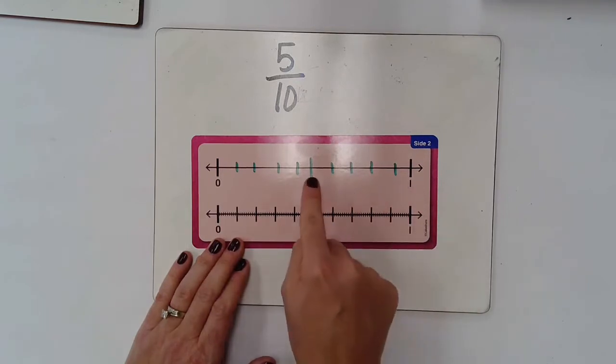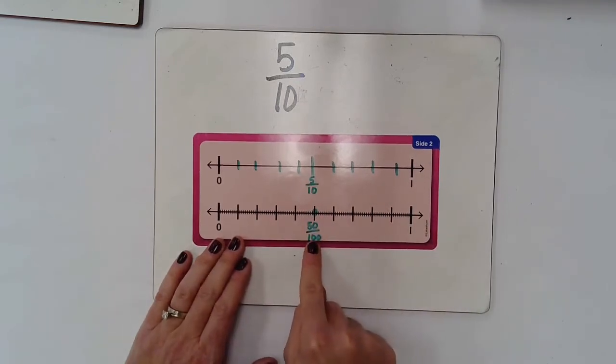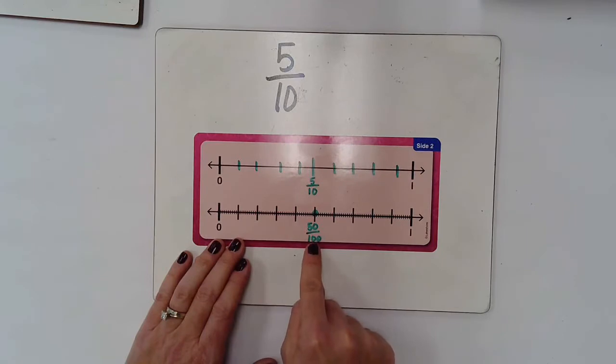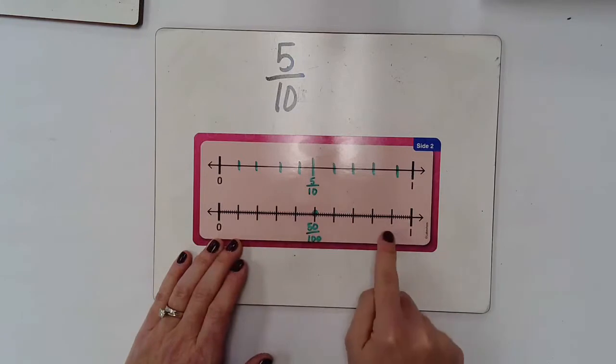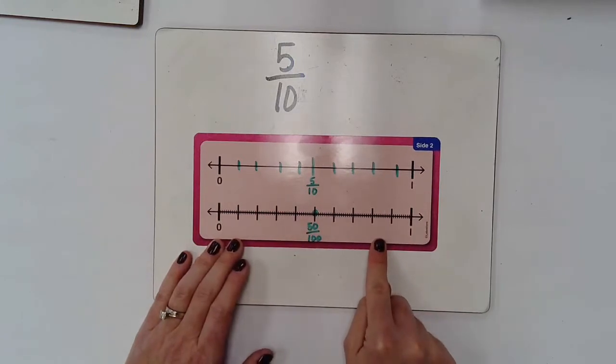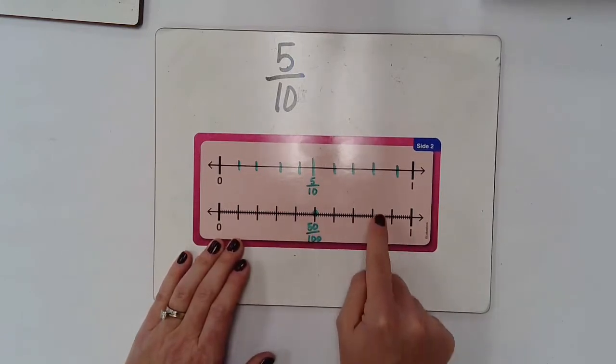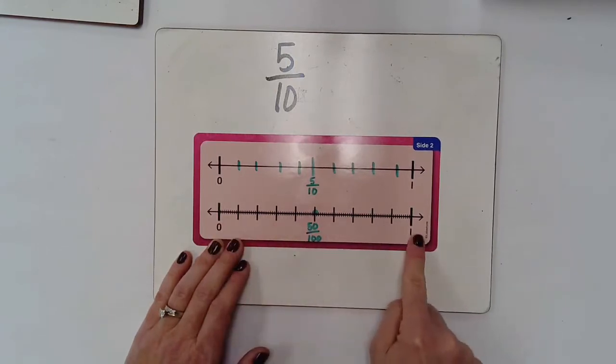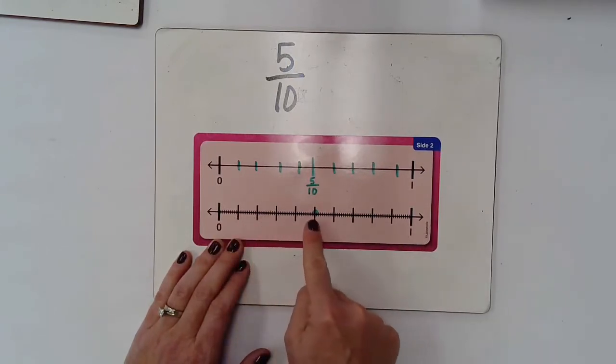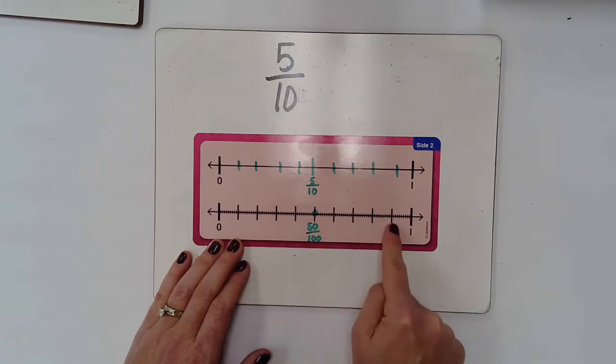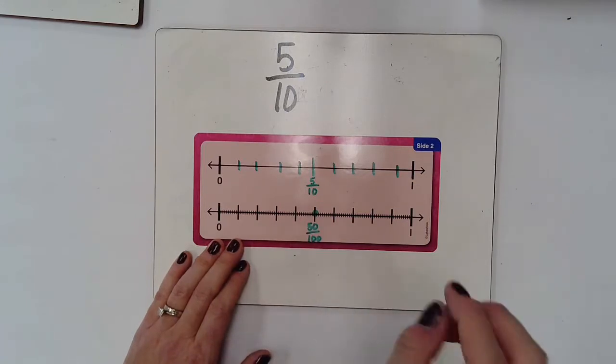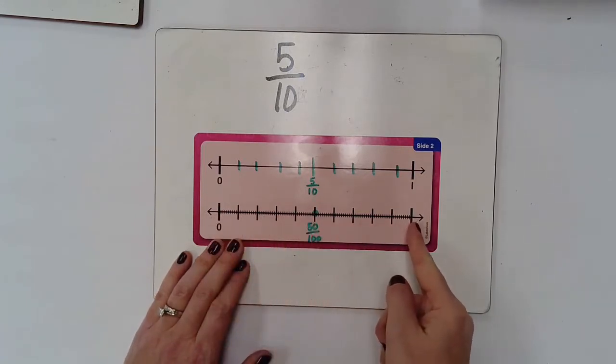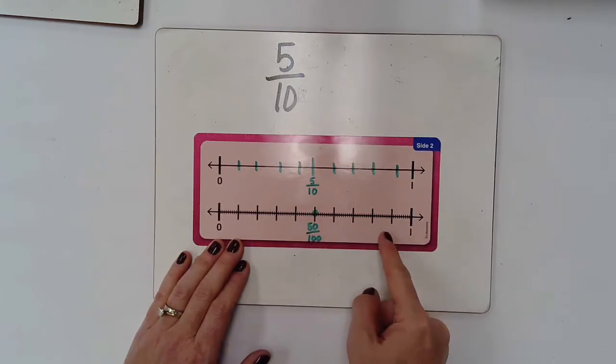If I want to figure out what would be the equivalent fraction to that with a number that has a hundred spaces, I could look down here at this number line. And this number line looks similar to the one above. It starts at zero, ends at one. It does have ten dark lines here, but in between each dark line are ten more equal spaces, giving me a hundred total spaces on this bottom number line.